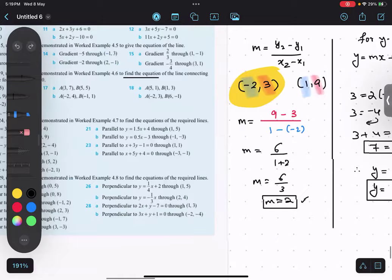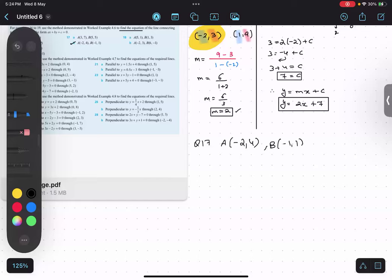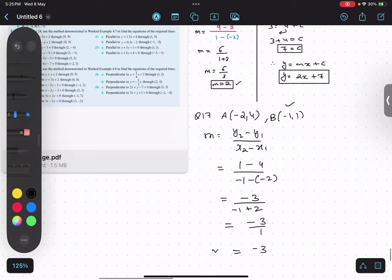So again, we will calculate first step m: y2 minus y1 upon x2 minus x1. The second point, y2 is 1 minus 4, minus 1 minus minus 2. So I will be getting minus 3 over minus 1 plus 2. Minus 3 and positive 1, so I will be getting minus 3. My m is minus 3. How come your m is different? What was the mistake?